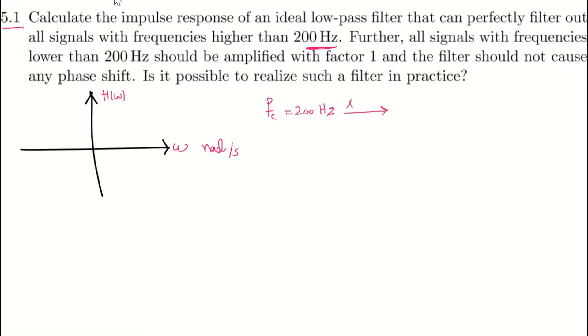We just need to multiply that by 2 times pi. So omega C, the cutoff frequency, is 400 pi radian per second. These two are the same. So 200 Hz is 400 times pi radian per second.